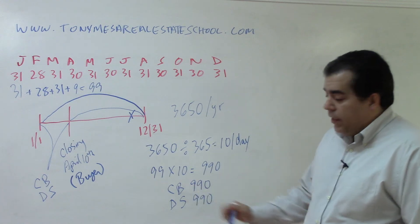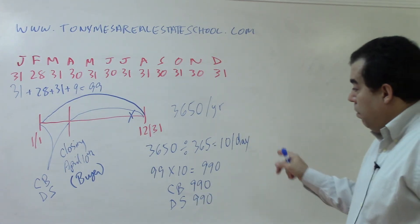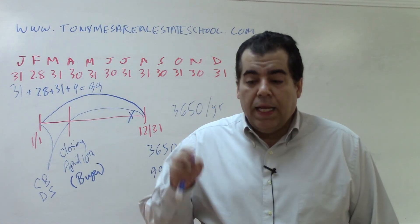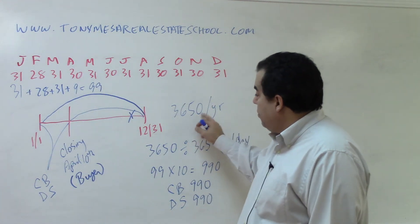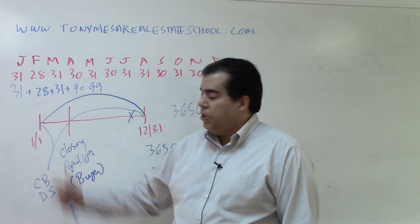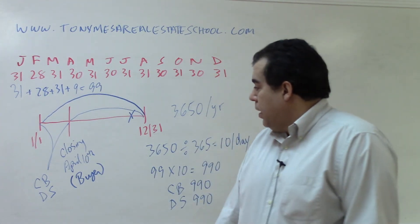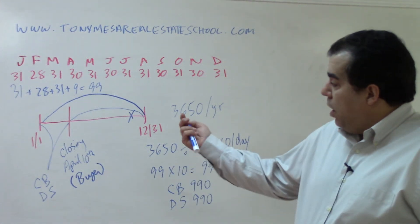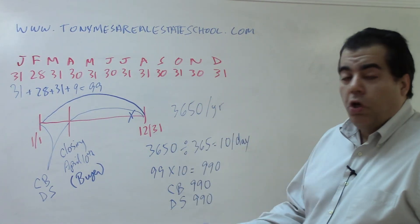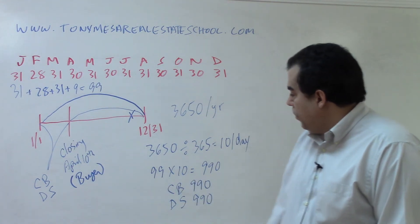Now, what does that mean that we credit the buyer $990? We're saying to the buyer, bring $990 less to the closing, and then when you have to pay the entire bill, $3,650, you've already been compensated at the closing for the seller's portion. What does it mean we debit the seller $990? That means we're saying to the seller, you own this property for that beginning part of the year, and at the closing, you're going to walk away with this much less. This money is coming from you.